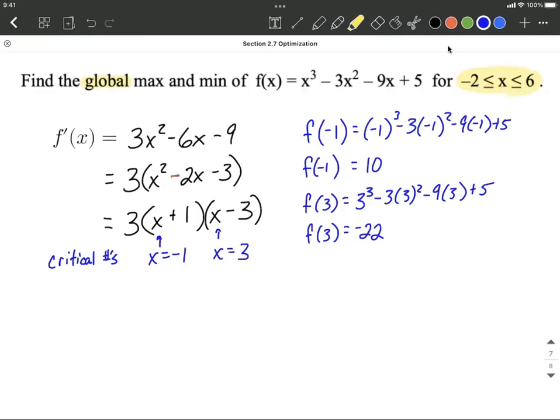We're only looking between negative 2 and positive 6. So sure enough, negative 1 and positive 3 both fit in that range of values for x. However, there's a possibility that we could have an endpoint at negative 2 or at 6 that's actually bigger or smaller than these. So what we want to do is also go back and evaluate our original function at negative 2 and at positive 6.